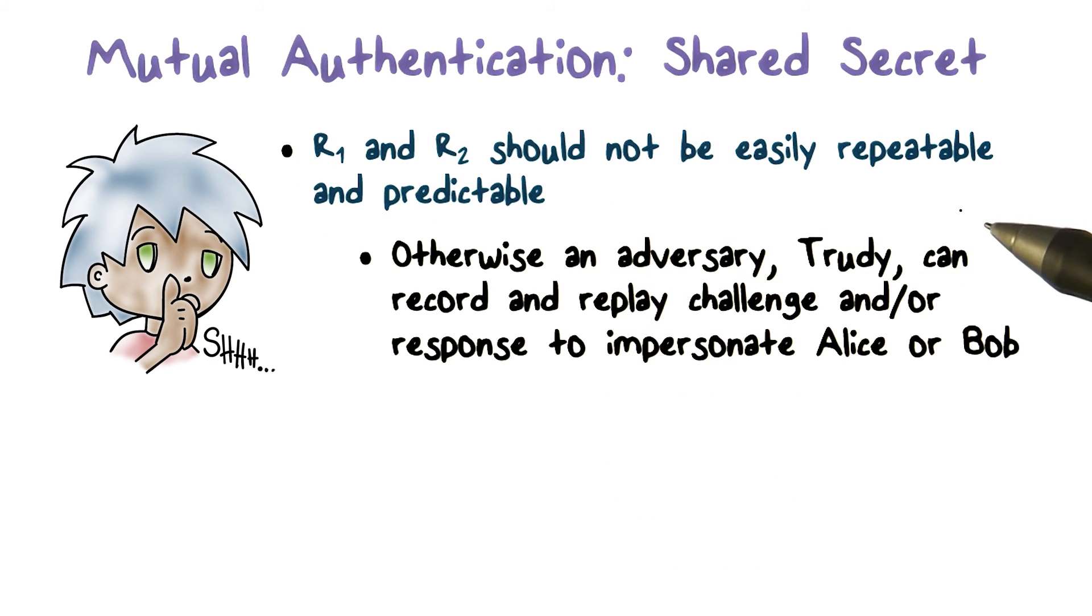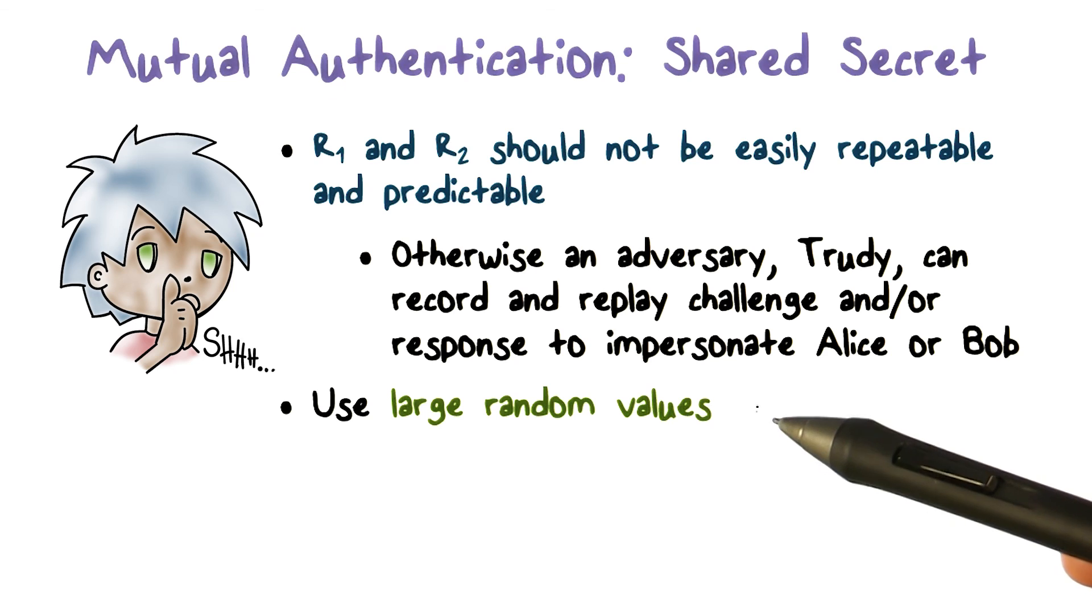Again, the most important precaution of using this authentication protocol is that R1 and R2 should not be easily repeatable or predictable. Otherwise, an intruder such as Trudy can impersonate Alice and Bob by simply doing record and replay. Therefore, R1 and R2 should be large random values.